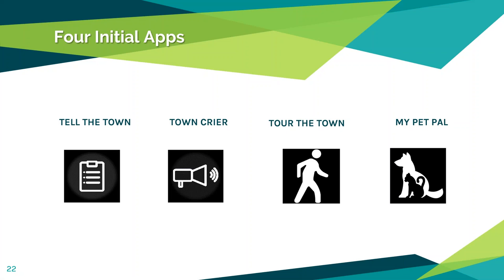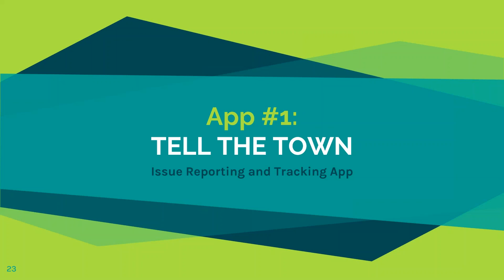We have four initial apps. The two fully ready now are Tell the Town, an issue reporter, and Town Crier, a public notice push notification system. We have one that's about 90% done called Tour the Town, which is essentially a build-your-own purpose-driven map system for community festivals and similar uses. The fourth, still under development with the working title My Pet Pal, is an app for registering animal licenses — dog licenses, cat licenses — along with other pet-related features.